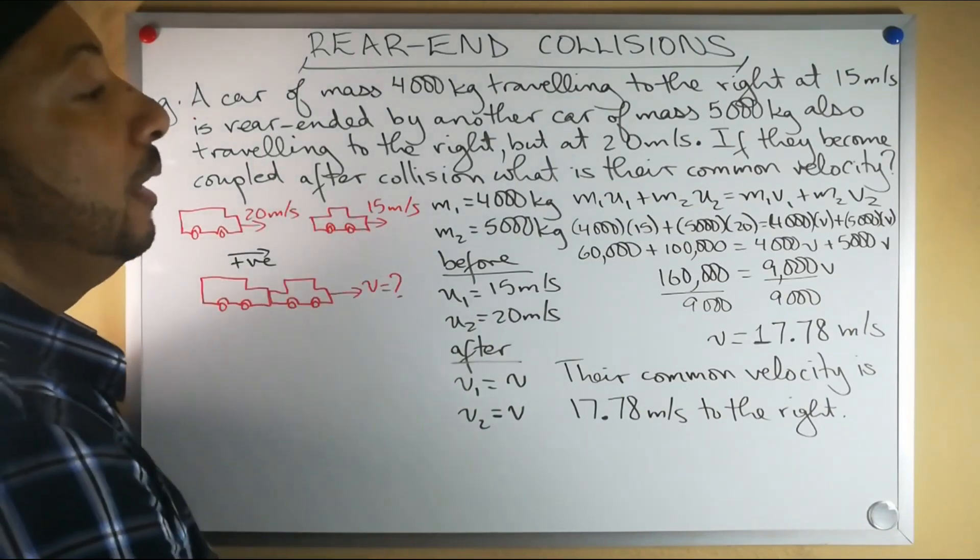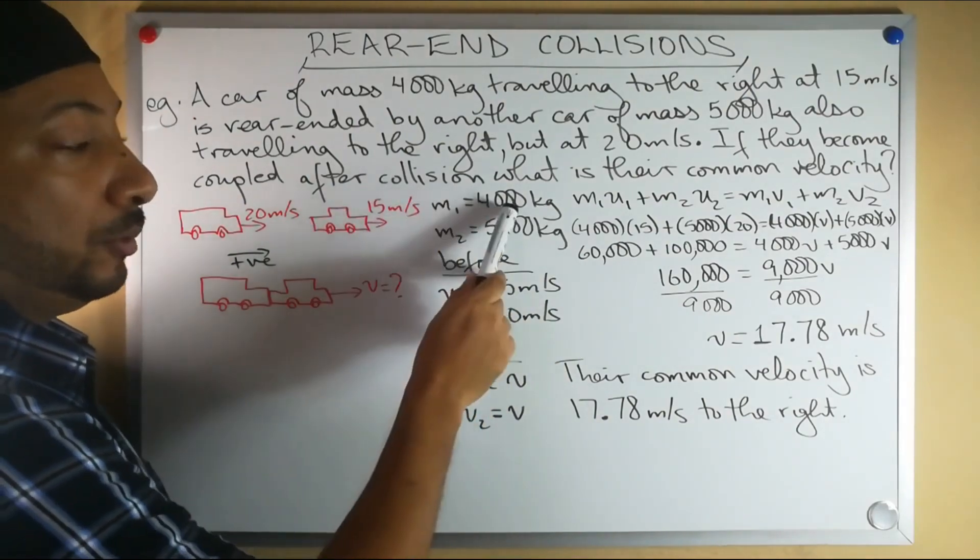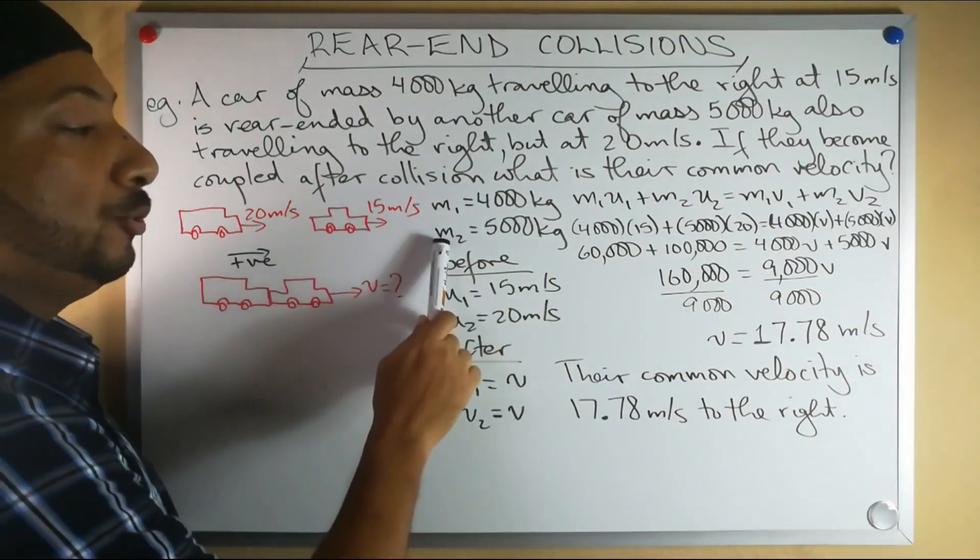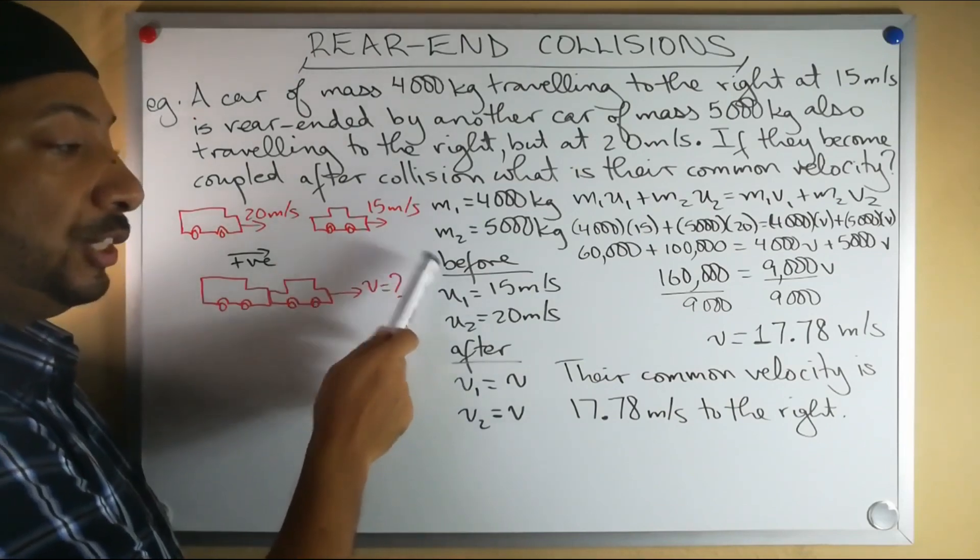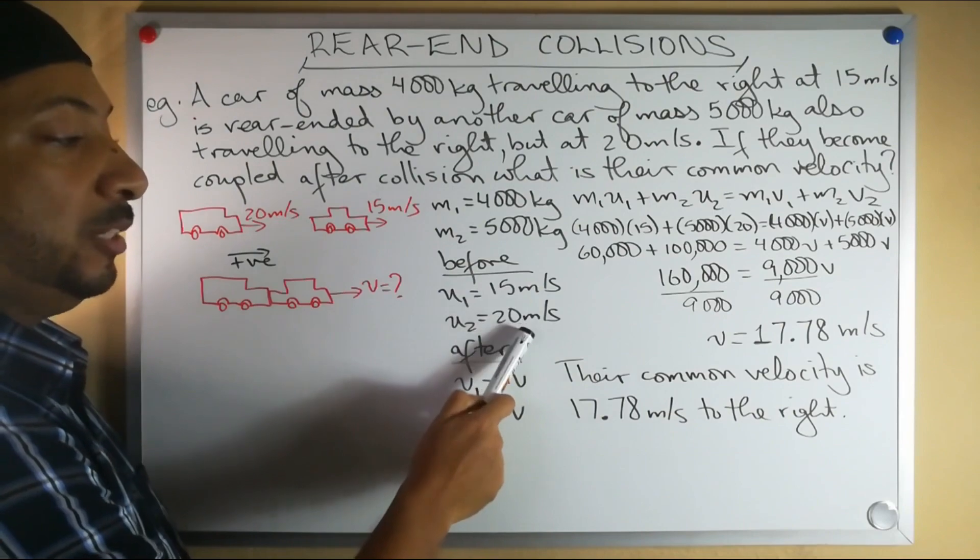Let's identify our givens. We have that the mass of the small car is 4,000 kilograms, the big truck is 5,000 kilograms. Before the collision, their initial velocities were 15 meters per second and 20 meters per second respectively.